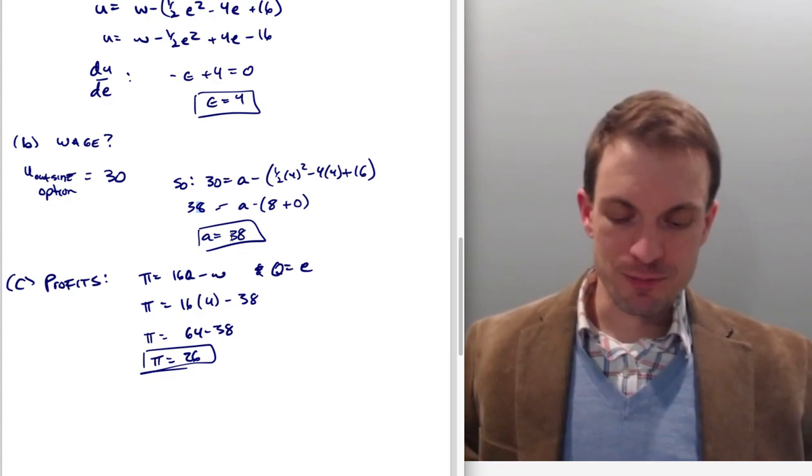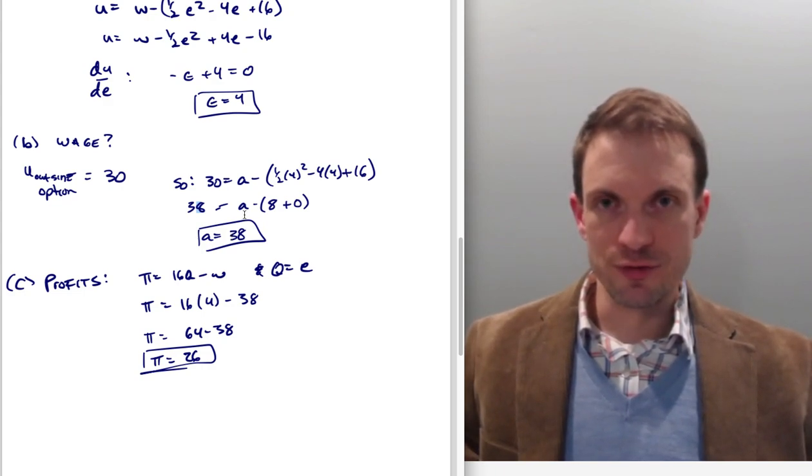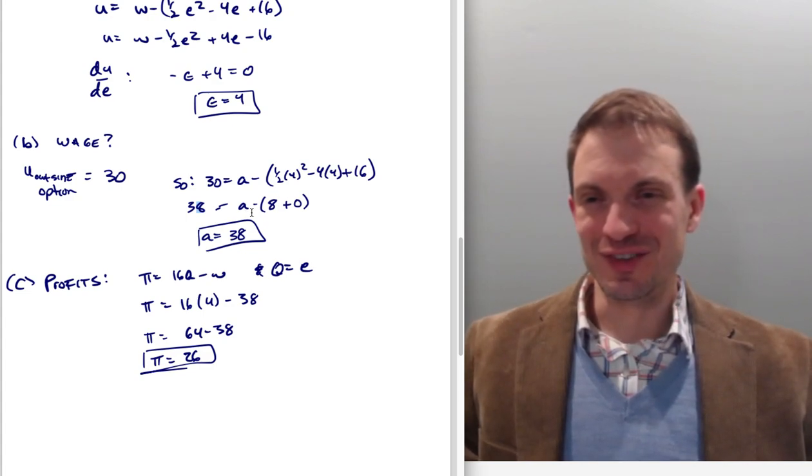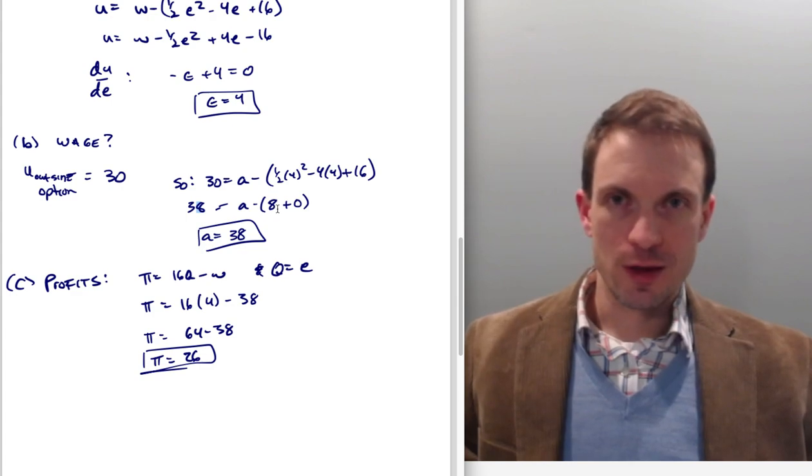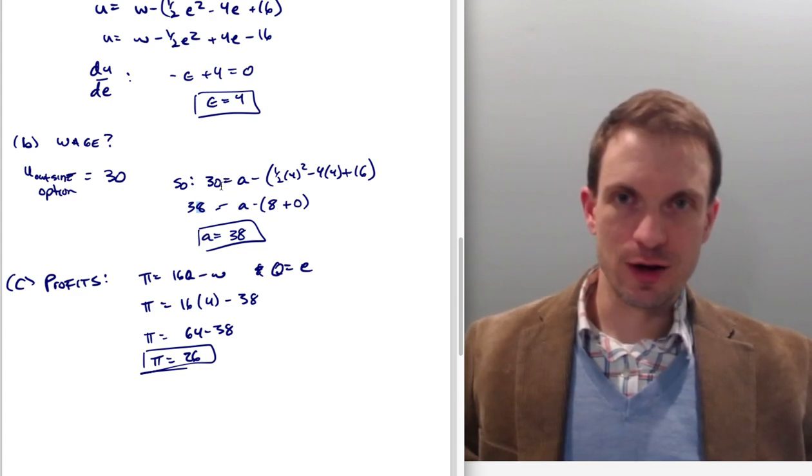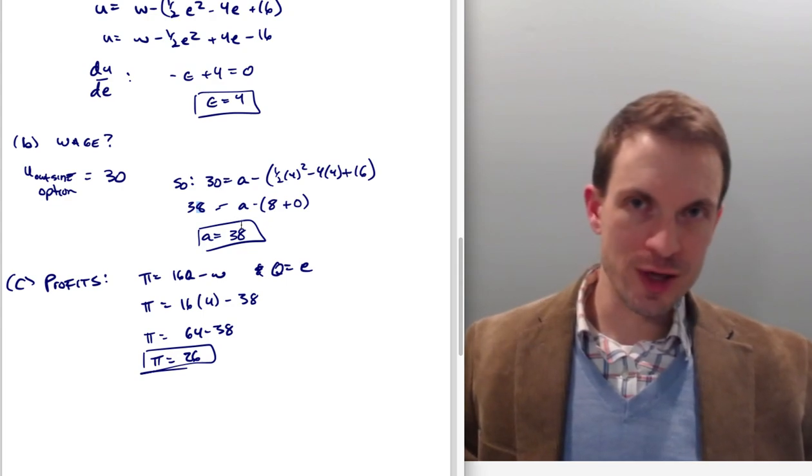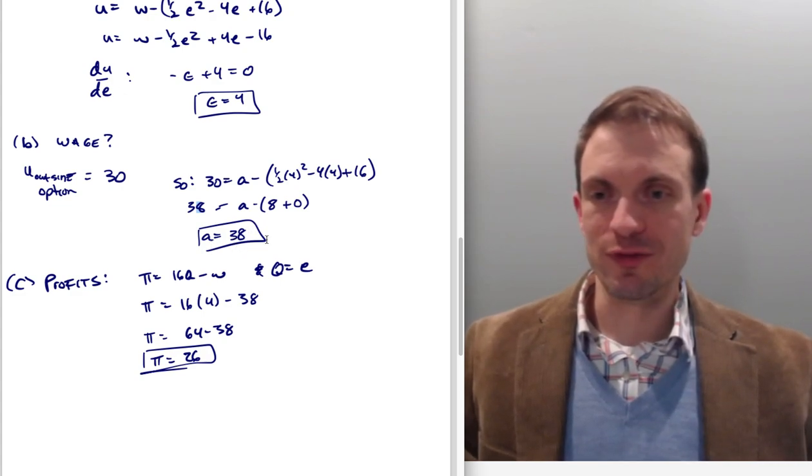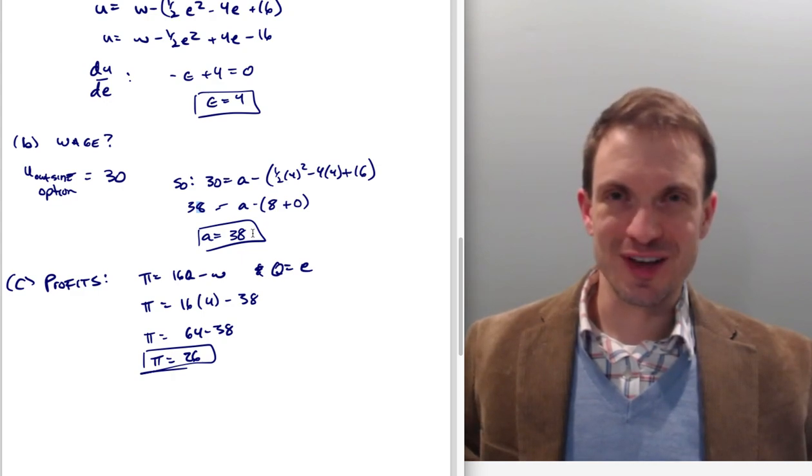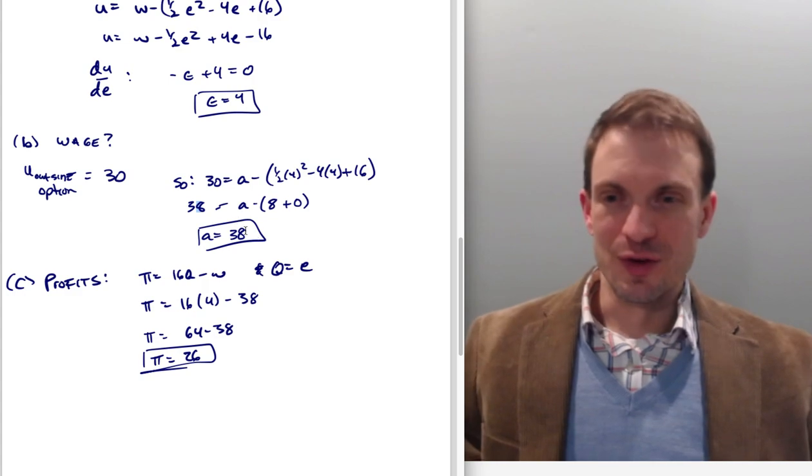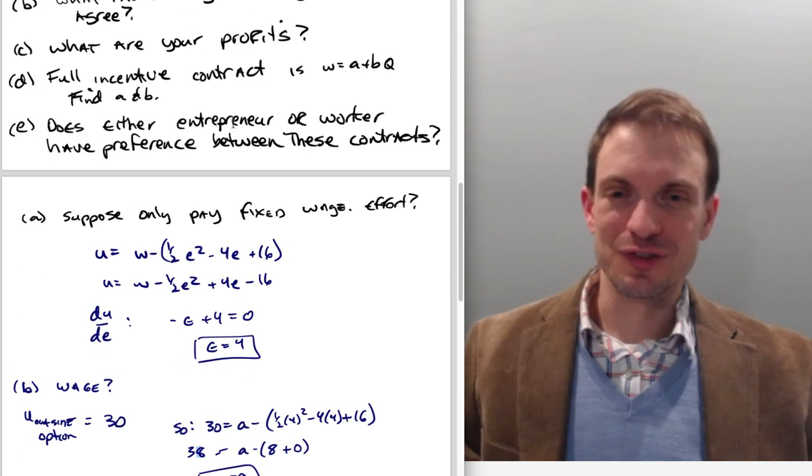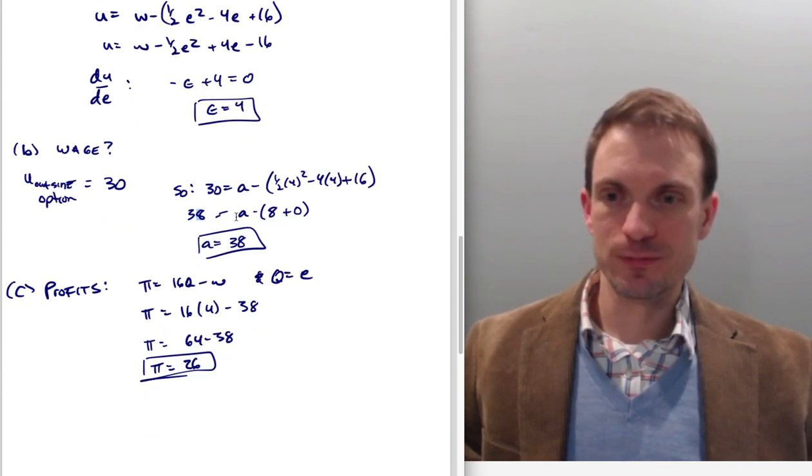So as we're solving here, just one more time, we have 30 is equal to this stuff. Evaluate effort at 4. We're going to find that we'll get 30 is equal to A minus 8. Move the 8 to the other side. So A has to be 38, right? So then thinking about this to make this make better sense, the effort cost associated with a level of effort of 4 is going to be 8. And we need the worker to get at least 30, otherwise they'd rather take their outside option. So we have to pay them 38 so that they're compensated for their effort.